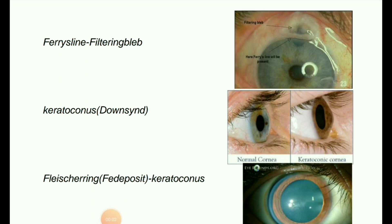Next image: Fleischer ring, occurring due to iron deposition. These are pigmented rings in the peripheral cornea resulting from iron deposition in basal epithelial cells in the form of hemosiderin. They are usually yellowish to dark brown and may be complete or broken. It is a degenerative corneal condition that causes the cornea to thin and change to a conic shape.